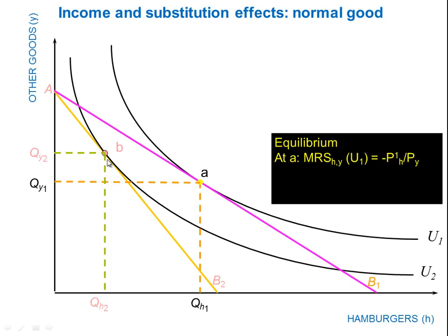We've got a new equilibrium at B because of this price change. We've got a situation where our utility, as measured by the indifference curve, has fallen — we've gone from U1 to U2. We're less happy at U2 than at U1. As the price goes up, you buy fewer hamburgers and your utility falls. That's sometimes considered the overall price impact, and as we'll see in a moment, that's part of what's called the Marshallian demand curve.